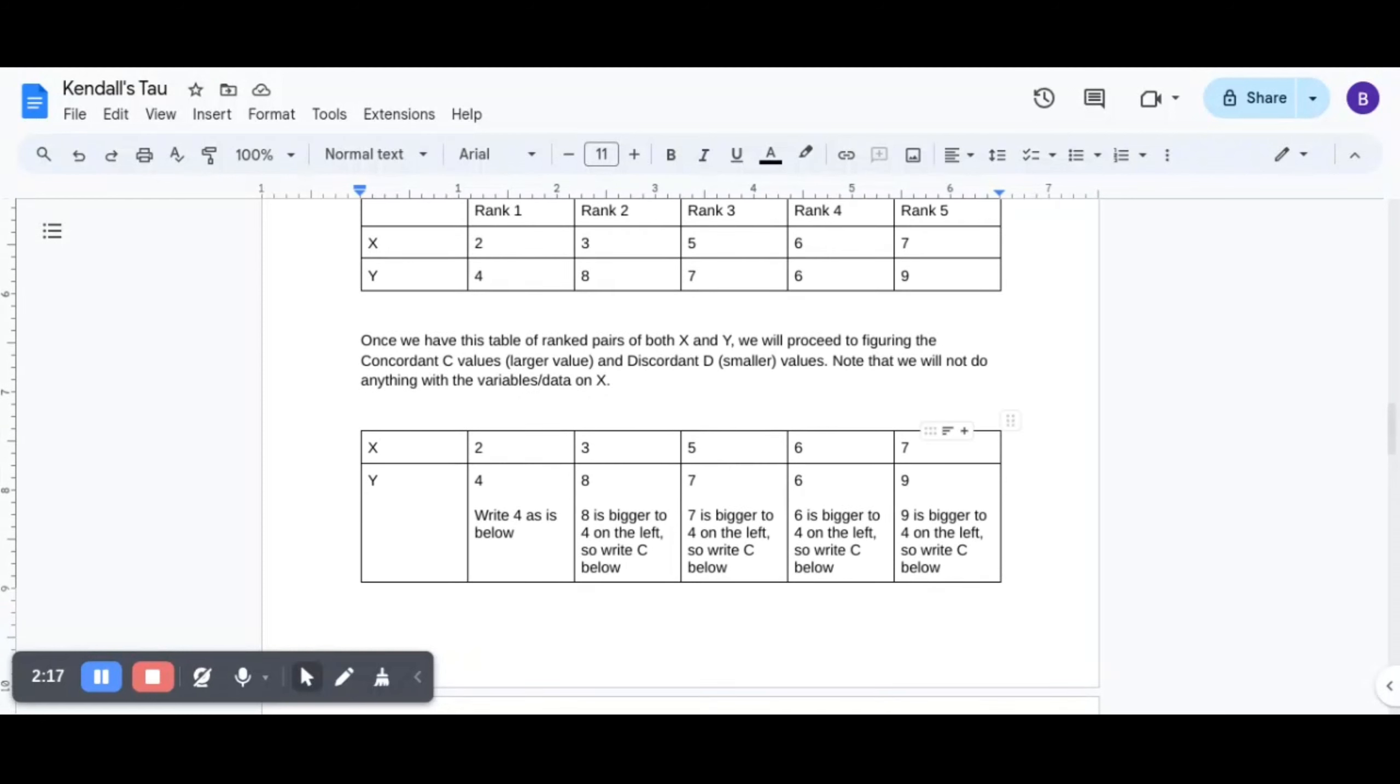Now, once we have this table of ranked pairs of both X and Y, we will proceed to figuring the concordant, which is the C values means the larger values and discordant, the D values mean the smaller values.